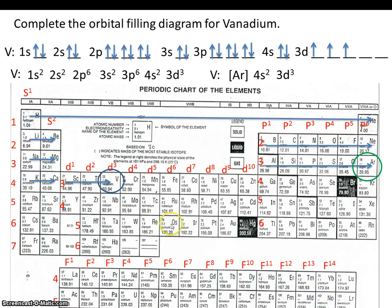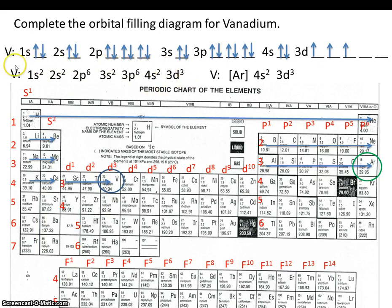So in review: this is an orbital filling diagram, this is an electron configuration, and this is a shorthand electron configuration.